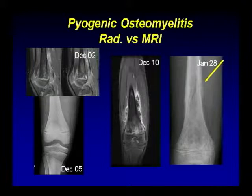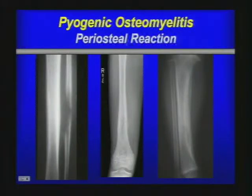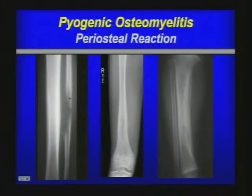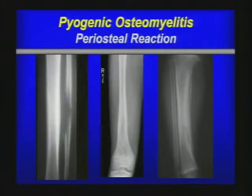This slide shows different types of periostal bone formation. On the far left, a very aggressive staphylococcus aureus infection shows Codman angle-like formation — you might think of tumor, but this is aggressive infection. The middle case shows a more subacute periostitis. On the right, chronic osteomyelitis is characterized by solid periostal bone formation, substantial sclerosis, and well-defined borders.